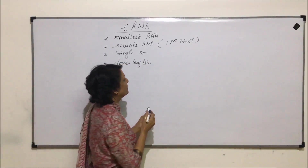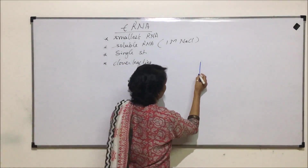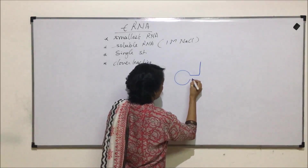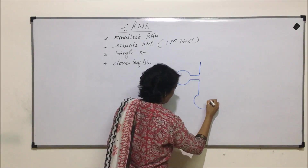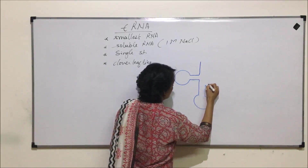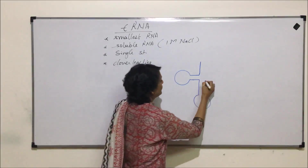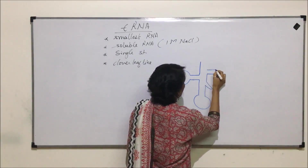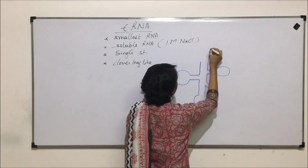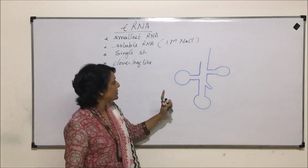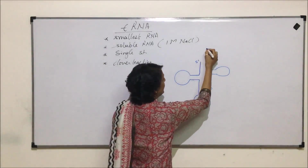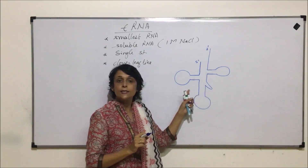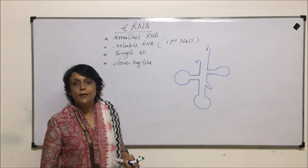Now let us see the structure of this RNA. This RNA has three arms and loops. There is a small projection which is considered as vestigial. One end is the 5' end and the other end is the 3' end. Because of bonding between the bases in the same strand, this shape is attained.